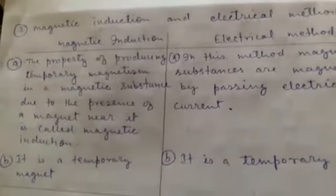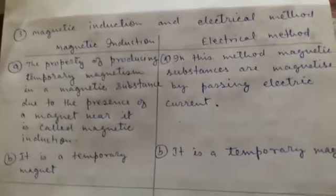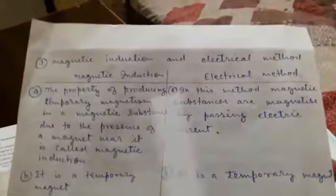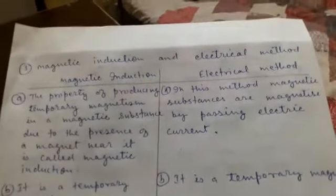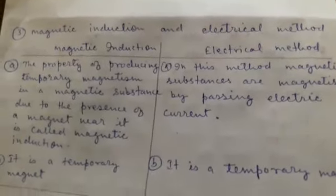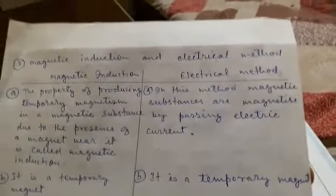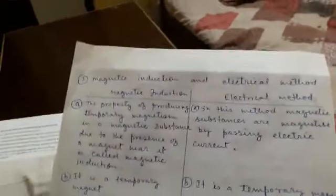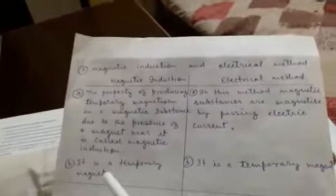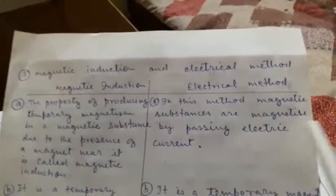Question 3: Difference between magnetic induction and electrical method. Make two columns. Magnetic induction: the property of producing temporary magnetism in a magnetic substance due to the presence of a magnet near it is called magnetic induction; it produces a temporary magnet. Electrical method: in this method, magnetic substances are magnetized by passing electric current; it also produces a temporary magnet.